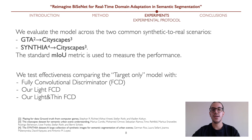We test our model on the two standard synthetic-to-real benchmarks in domain adaptation for semantic segmentation. The standard discriminator used for comparison is a common fully convolutional discriminator with five convolutional layers. Our lightweight variant is obtained by substituting each convolution operation with a depth-wise separable convolution. The thinner version, 'light and thin', has only three convolutional layers.